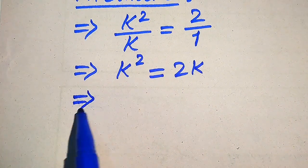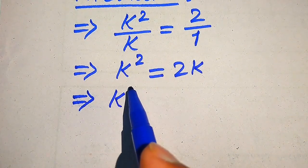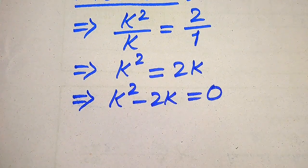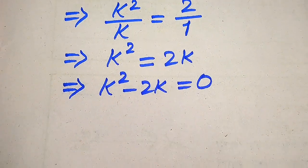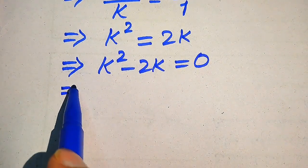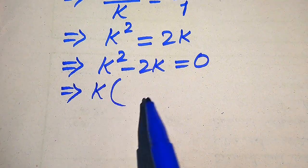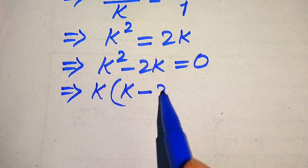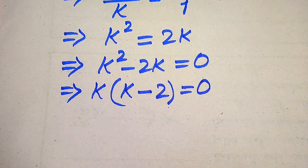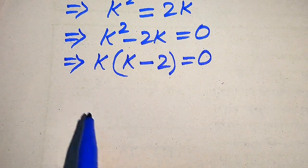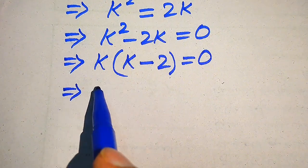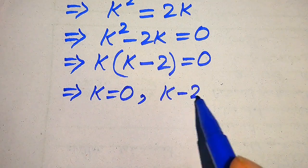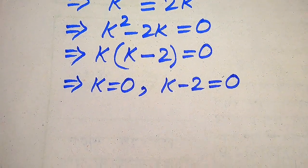In the next step we move 2k to the left hand side, giving us k squared minus 2k equals 0. Both terms involve k, so we factor out k to get k times (k minus 2) equals 0.